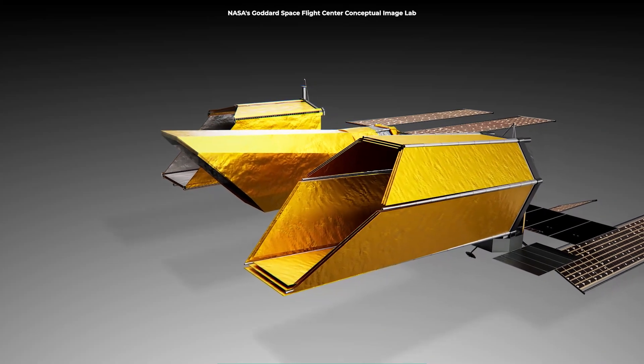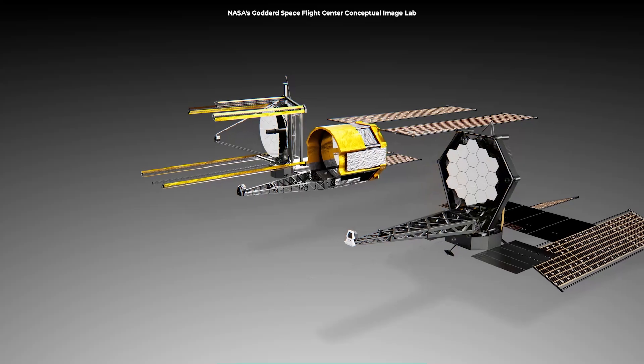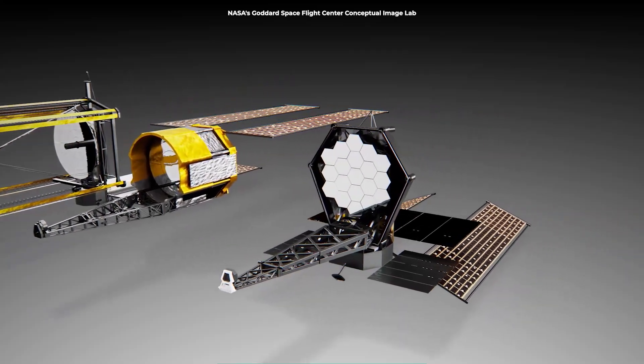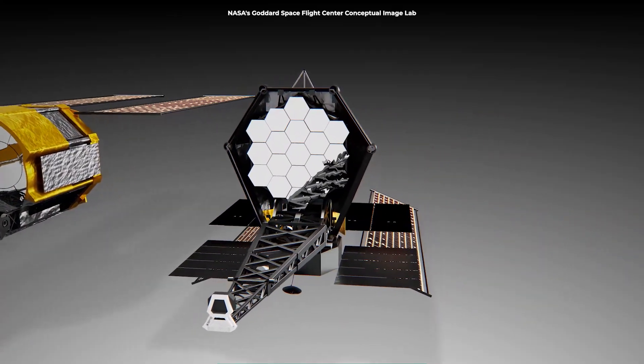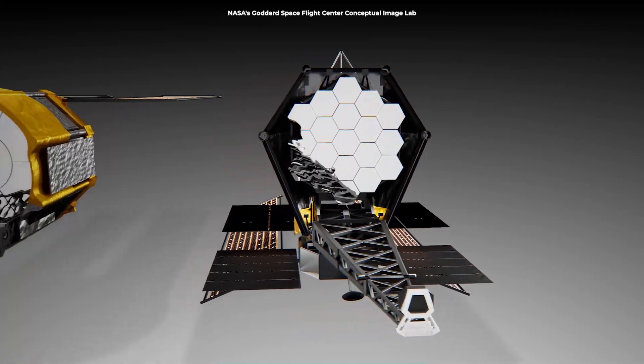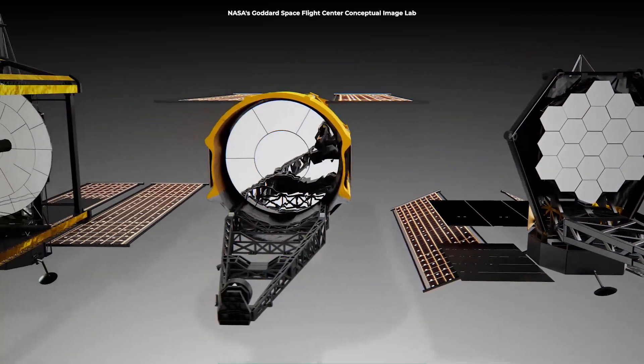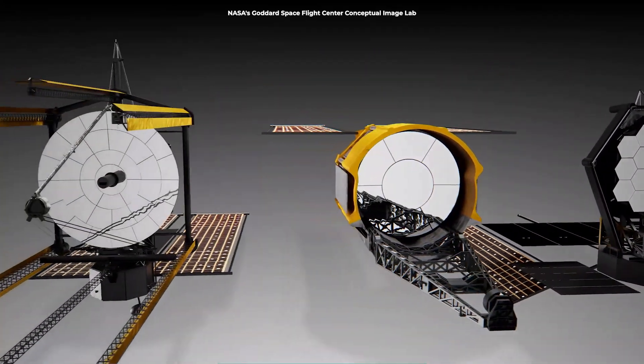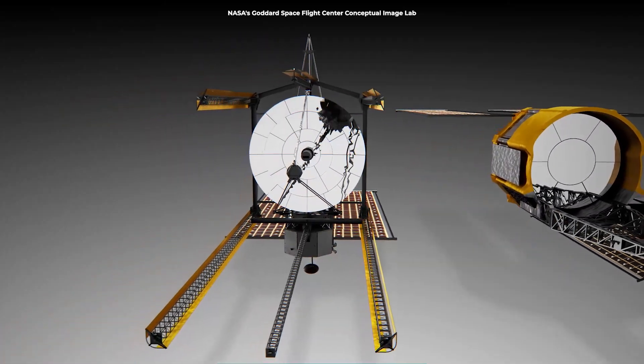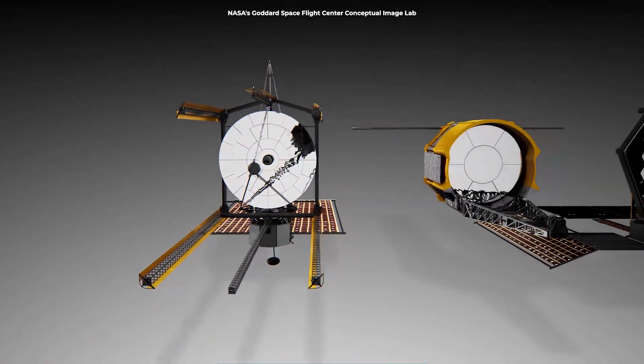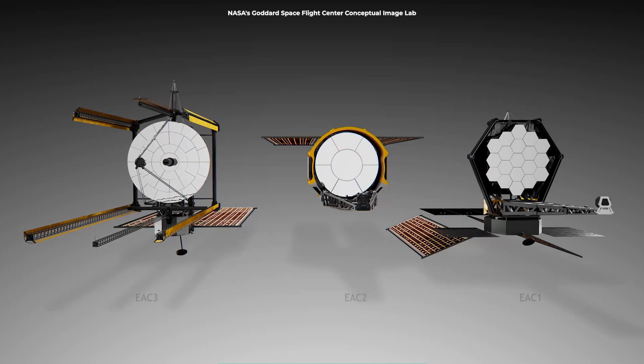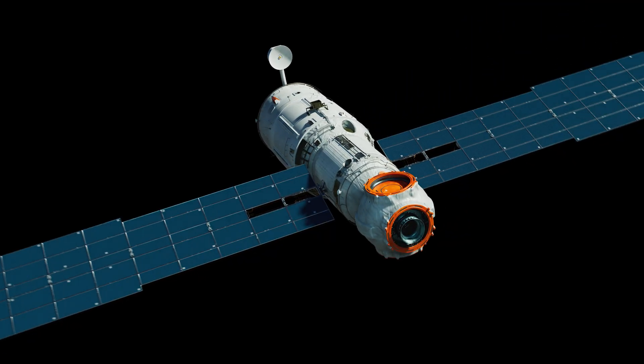The Habitable Worlds Observatory is being designed with something that's never been done before. A fully robotic servicing system that's like something out of science fiction. Imagine if you will, a high-tech armoire in space. Behind the telescope's primary mirror, there's a special truss structure where all the scientific instruments live in their own compartments, like drawers waiting to be accessed.